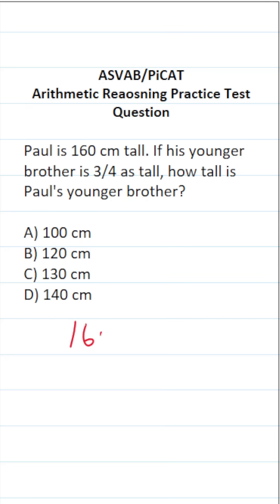So again, Paul is 160 centimeters tall. We know his brother is 3 fourths as tall. So to find out how tall Paul's younger brother is, we do 160 times 3 fourths.